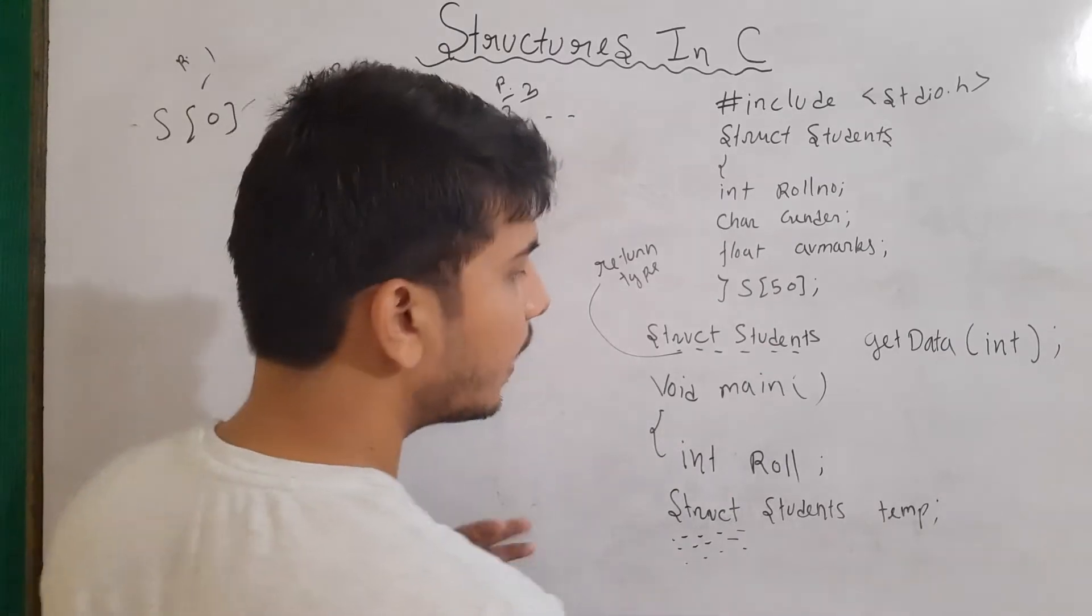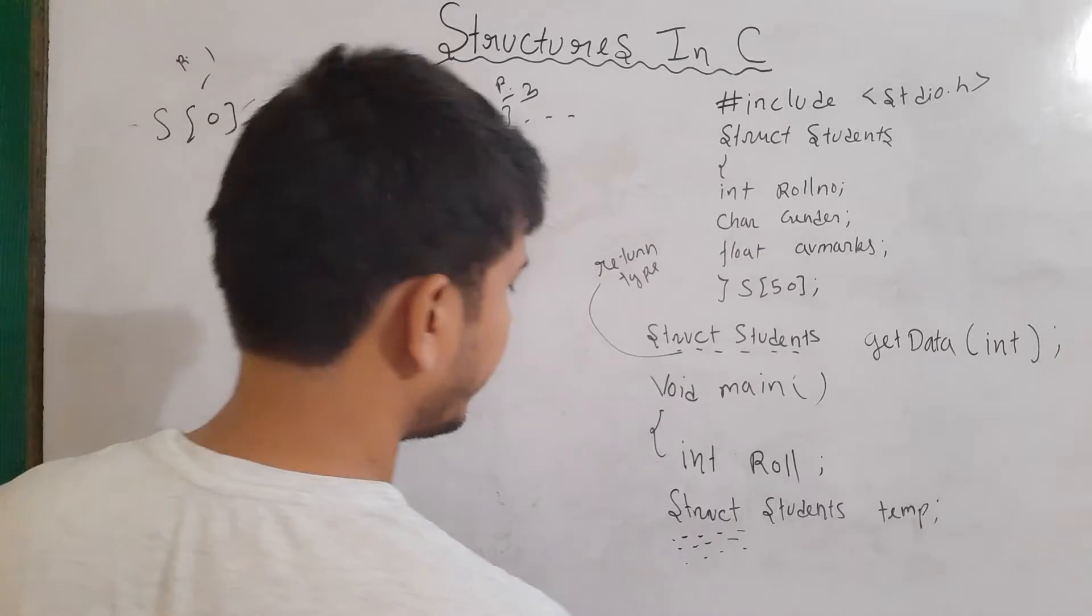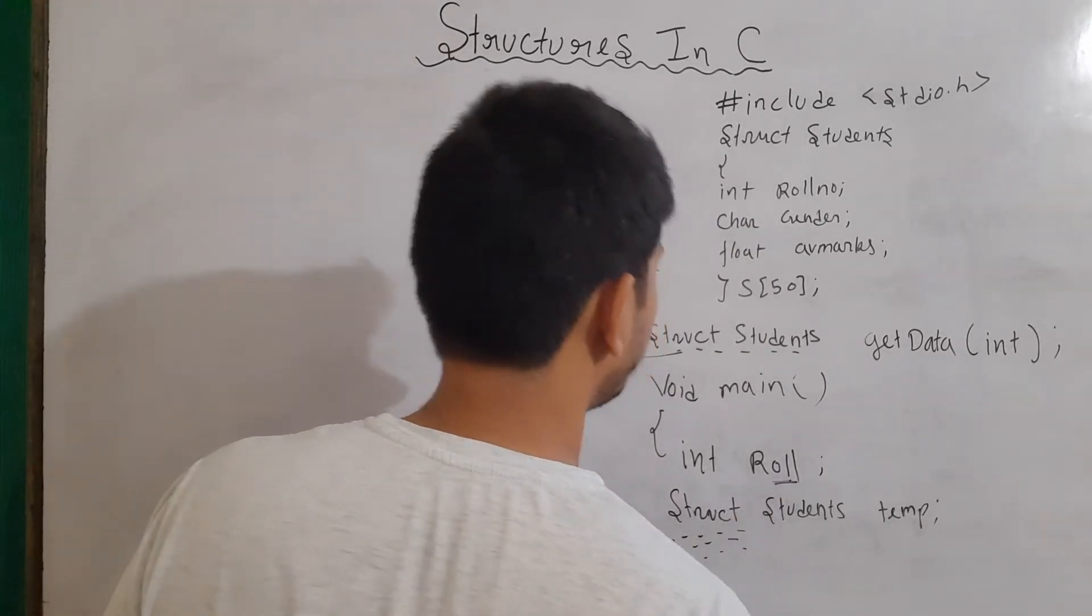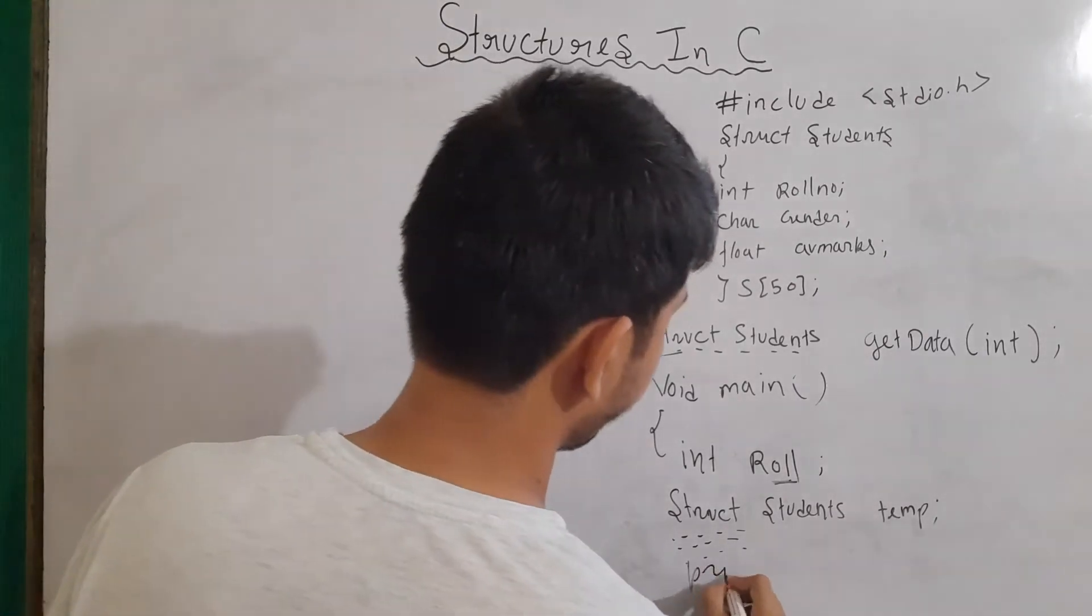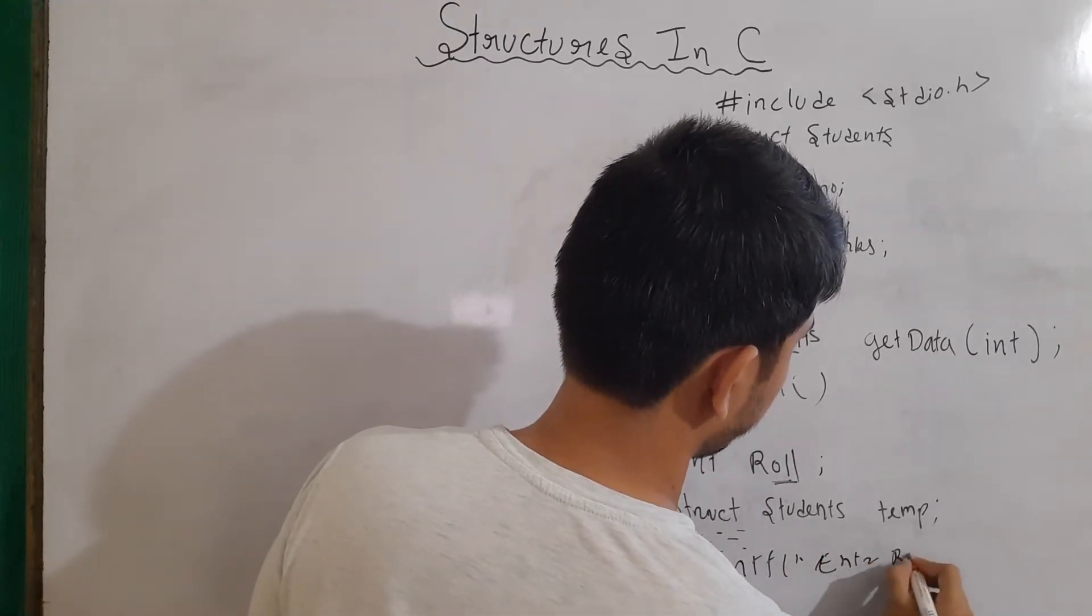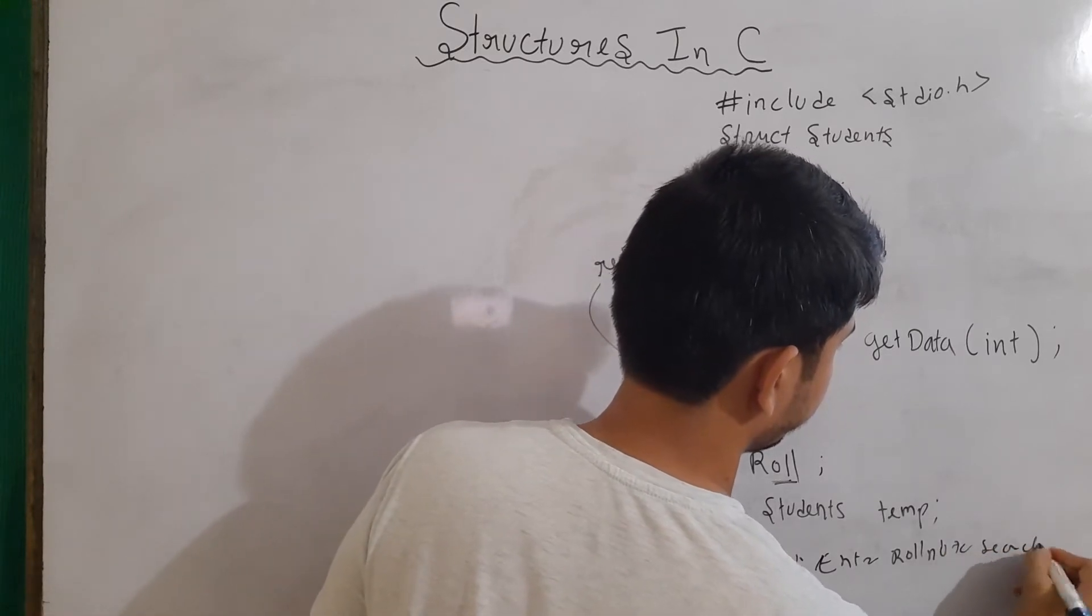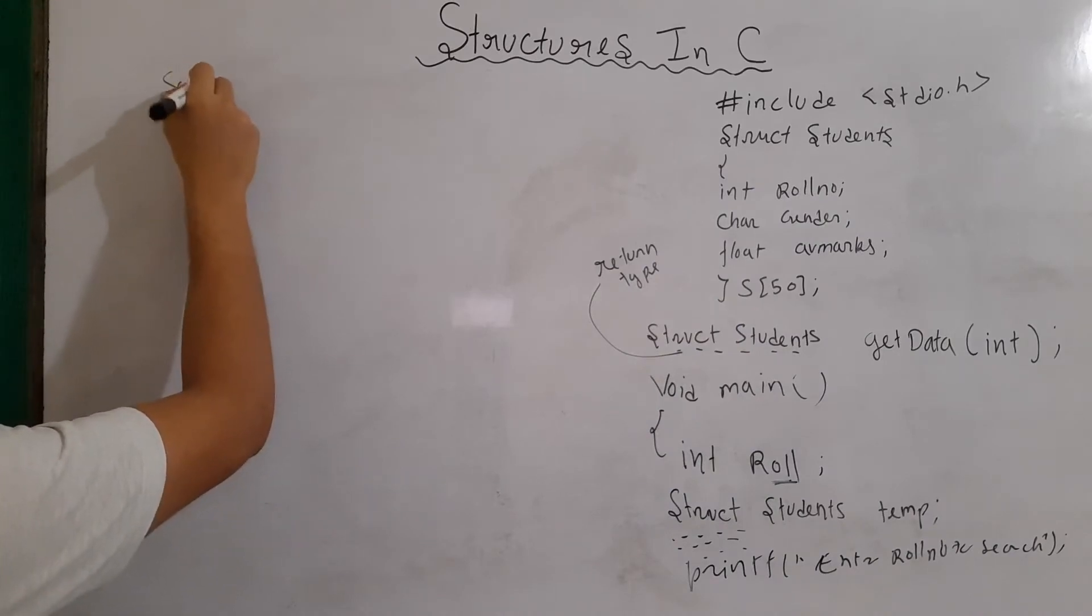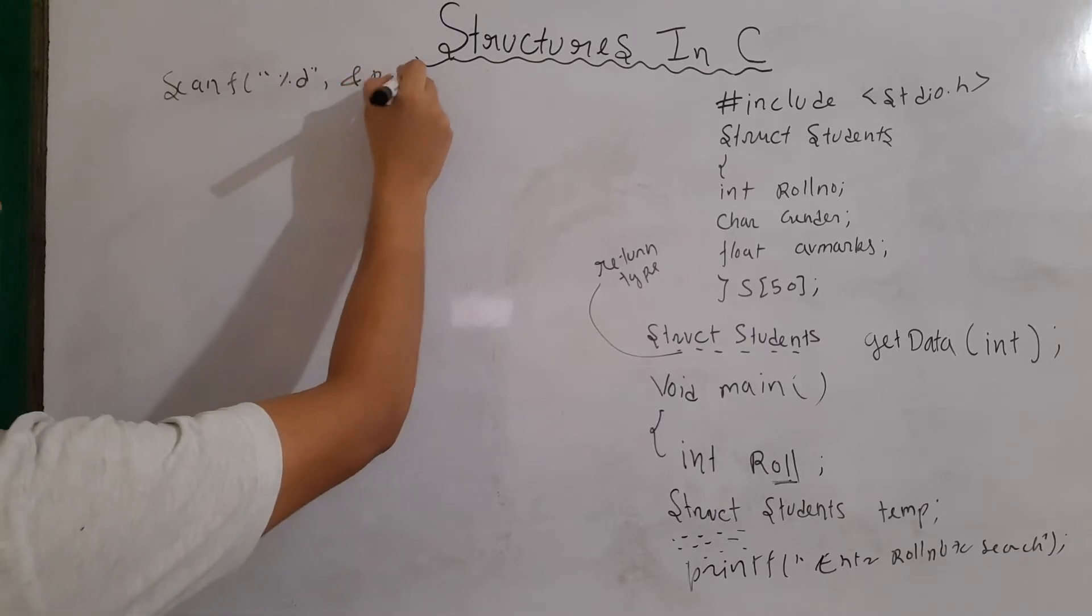If you don't know about how to write it, I had described it in the previous video, how we can take the input of the information. After that, I will be storing the value of role to ask the user what role number you want to search. So, we can write here printf, enter role number to search. Now, here, I'll write scanf, then simply percent d, and ampersand of role.